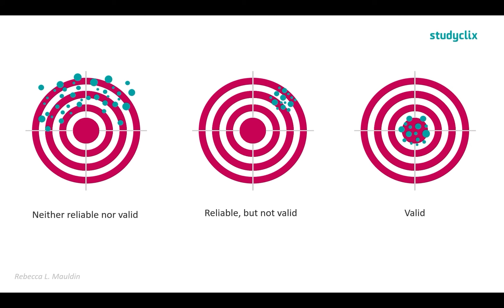The last target shows what it looks like when results are both reliable and valid — they're clustered together and in the middle of the bullseye. We can have results that are reliable but not valid, as shown by the middle target, but we cannot have results that are valid but not reliable, because results will not be valid if they are scattered all over the target the way non-reliable results are.